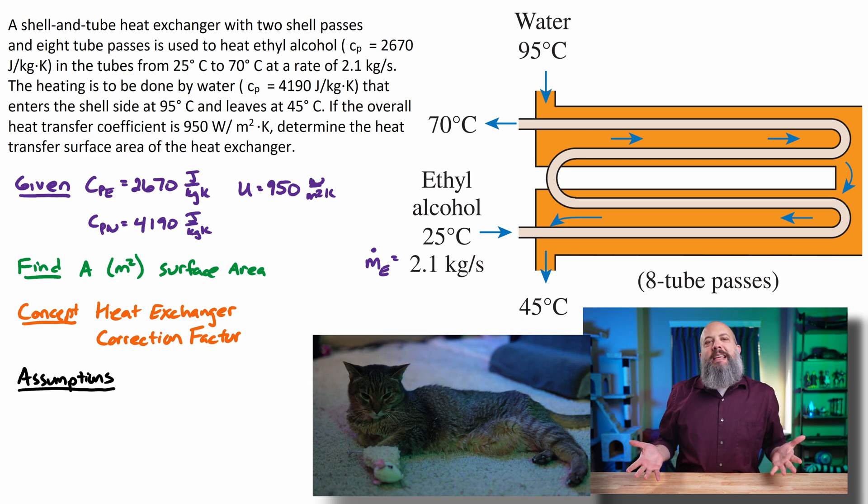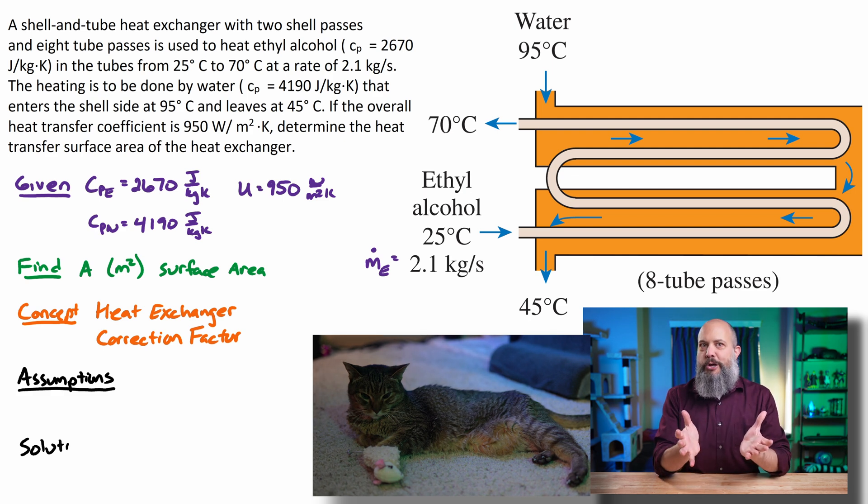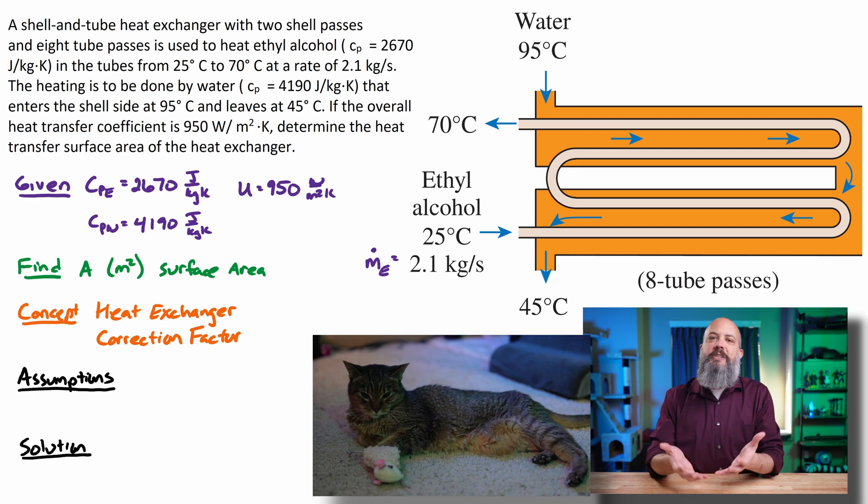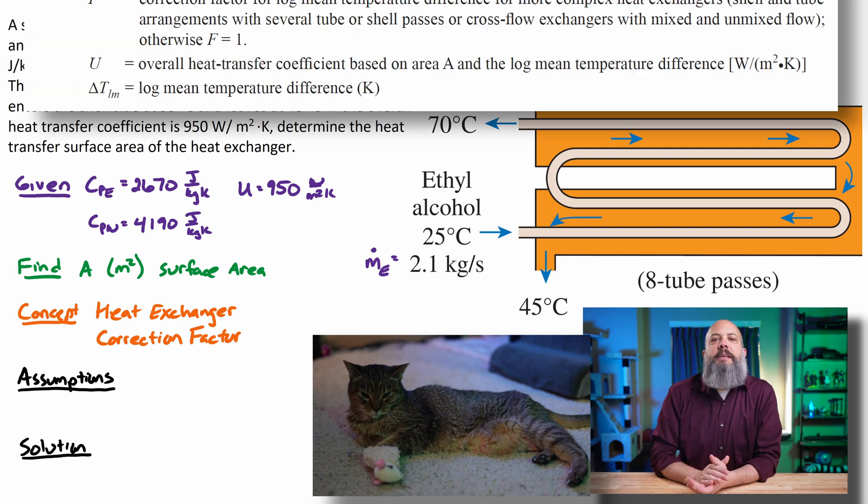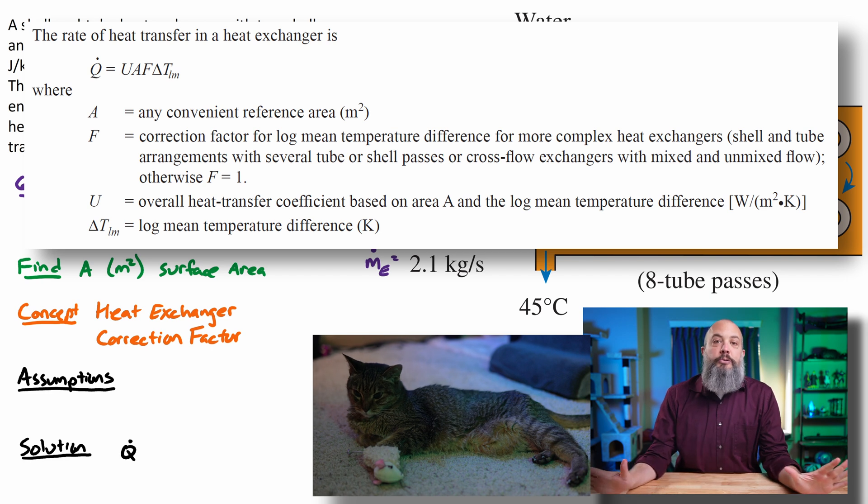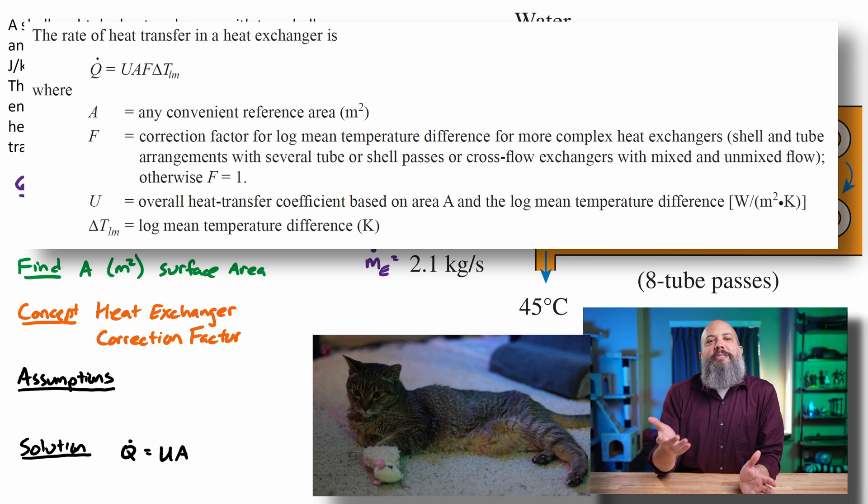Shell and tube heat exchangers are going to be a little bit different than regular parallel or counter flow double pipe style heat exchangers in that you need to apply a correction factor F. You'll still use the same main equation. Q is U A delta T,